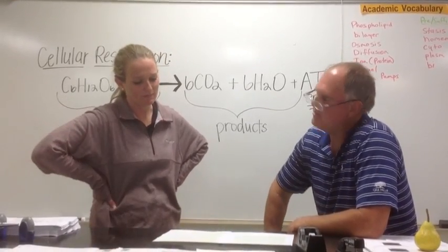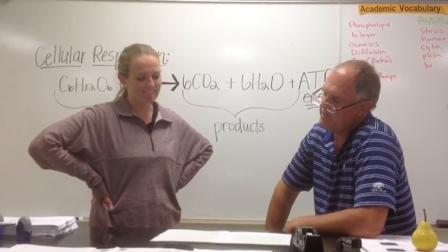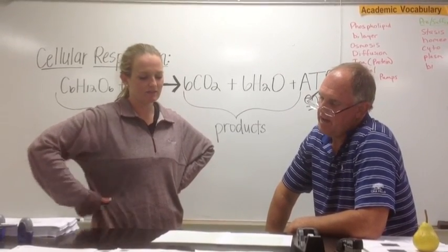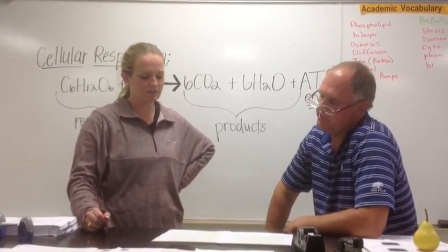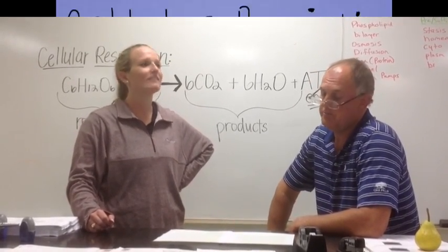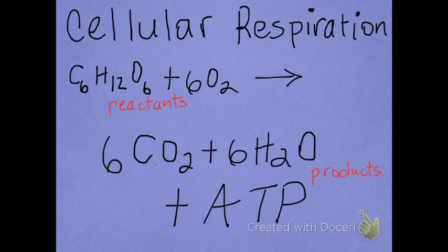Cells need to convert glucose to ATP so that cells can meet their energy needs for processes such as active transport and to keep everything working. Aerobic respiration produces much more ATP because oxygen is available, and this process happens in the mitochondria. The chemical equation for cellular respiration is: glucose plus six molecules of oxygen react to produce six molecules of carbon dioxide plus six molecules of water plus ATP.